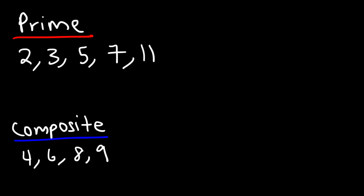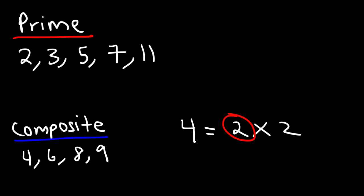Now why is that the case? Why is 4 a composite number? The factors of 4 are 2 and 2. If you can find two factors — two whole numbers that multiply to 4 — that is not 1, then the result is a composite number. That's why 4 is a composite number: we can express 4 as a product of two whole numbers that is not 1.